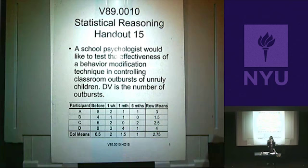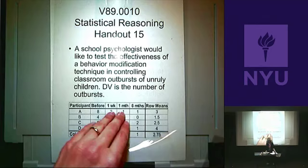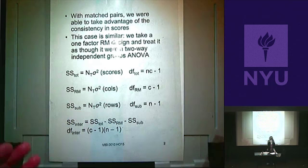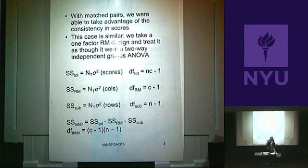So the way we're going to do this is going to have to be a little different. We're not going to have an SS or an MS within. We're going to have to find a different denominator for our F ratio, and that's called the error term.